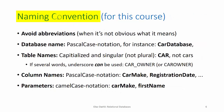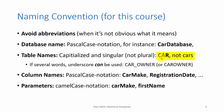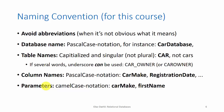Here is the naming convention we will use for databases in this course. Avoid abbreviations unless it's obvious what it means. For naming a database, use the Pascal case notation. For naming the tables, use only capitalized letters and use singular form — for instance car, not cars. For column names, use Pascal case notation, the same as for database names. And for parameters, we use the camel case notation, which is the same as Pascal case only with a lower case as the first letter.